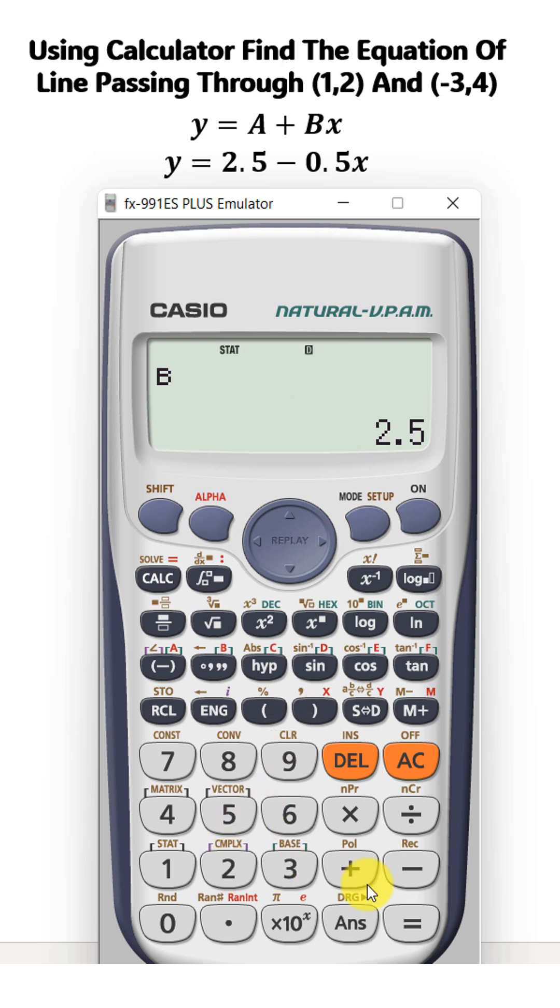The B value, which is the slope, is 2. Press equal. The slope is -0.5. So the line which passes through these two points is y = 2.5 - 0.5x, or we can say y = -0.5x + 2.5.